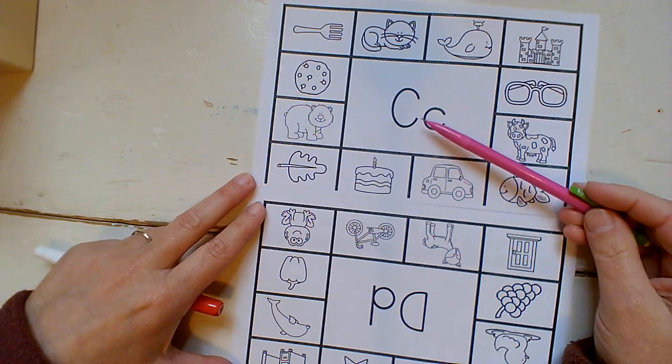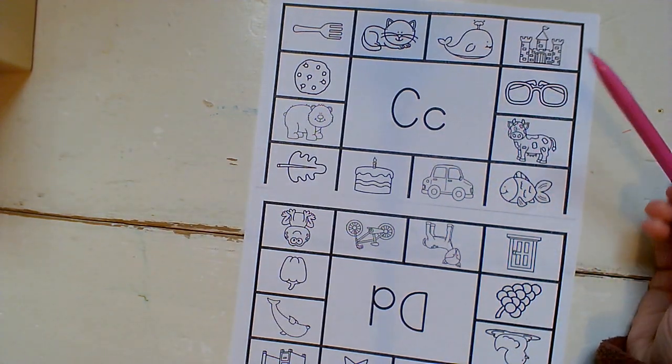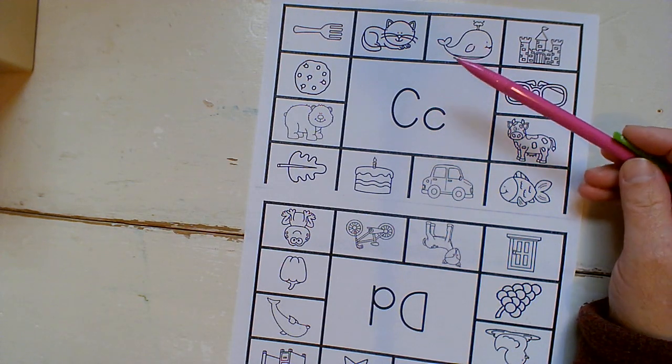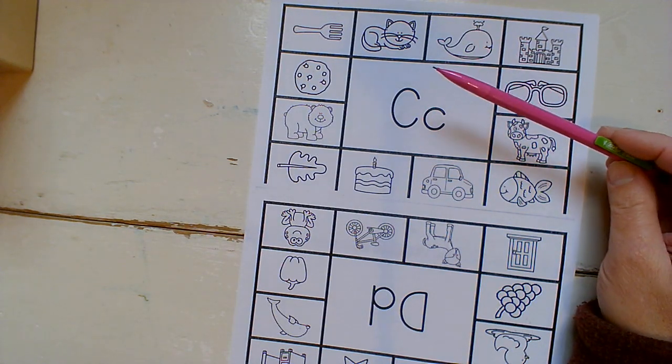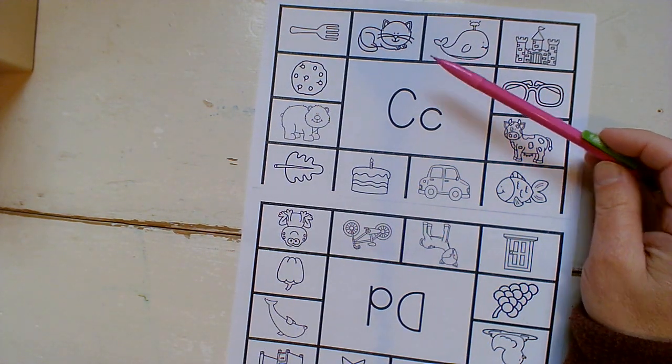Down here, we have C, C, C, C for Cora. Okay. C, C, C. Now, you'll color the picture if it starts with C. If not, put an X on it. Let's look at our pictures.